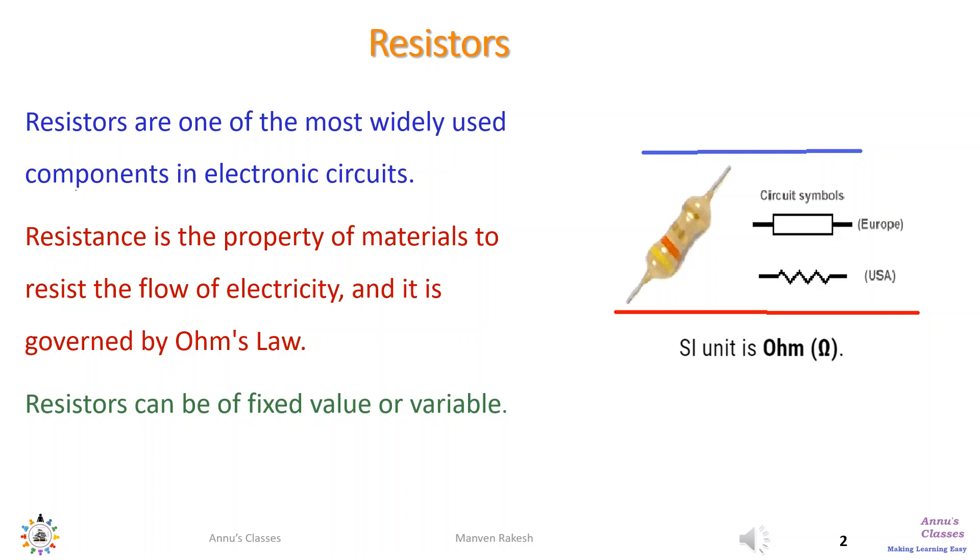Resistors can be of two types. Fixed value resistors whose values are fixed like 1 ohm, 5 ohm, etc.